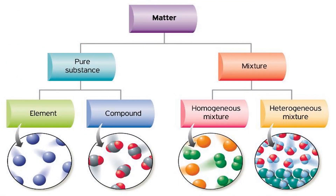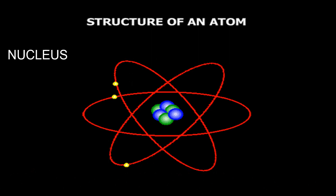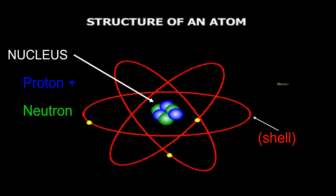Pure substance is further classified into element and compound. An element is made up of only one kind of atom. Look at the structure of an atom — it resembles our solar system. In the middle of an atom is the nucleus, which holds the proton, which is positively charged, and the neutron, which has no charge. Surrounding the nucleus is the shell, and it holds the electron, which is negatively charged.